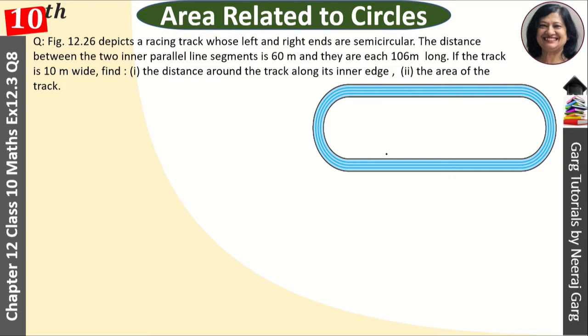So this is the track given. What is given in the track? The distance between two inner parallel segments is 60 meters. And they are 106 meters long. And the track is 10 meters wide.